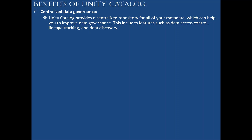The first benefit is centralized data governance. Unity Catalog provides a centralized repository for all of your metadata, which can help you improve data governance. This includes features such as data access control, lineage tracking, and data discovery. The main advantage is we can maintain our metadata in one place and control access rules, data tracking, data dependency tracking, and auditing — who is accessing the data — everything at one place.